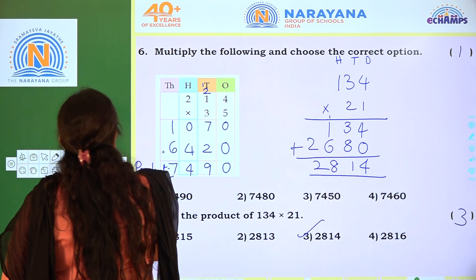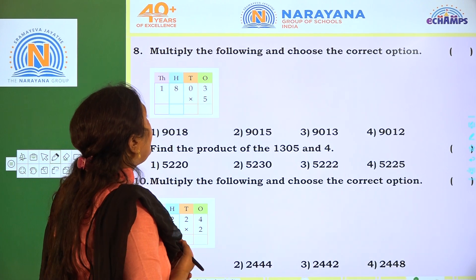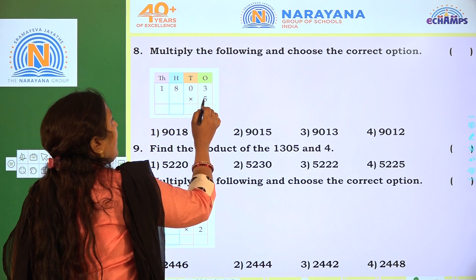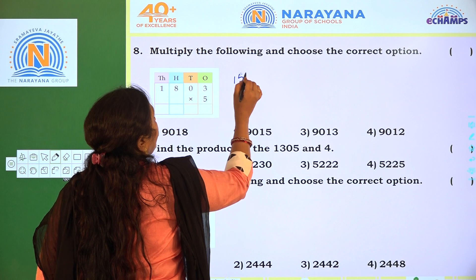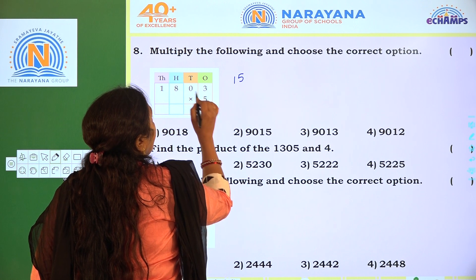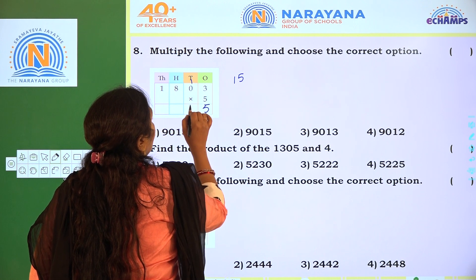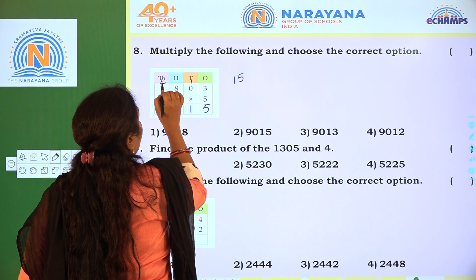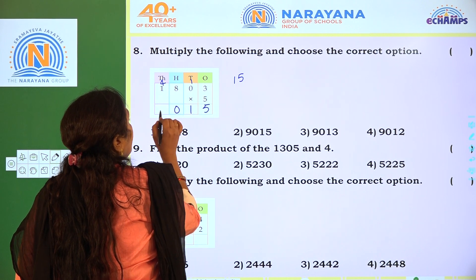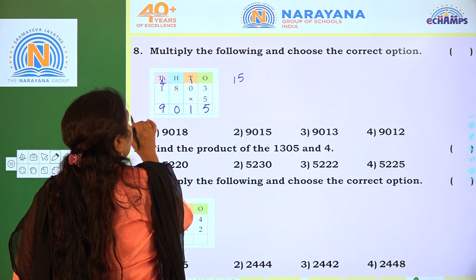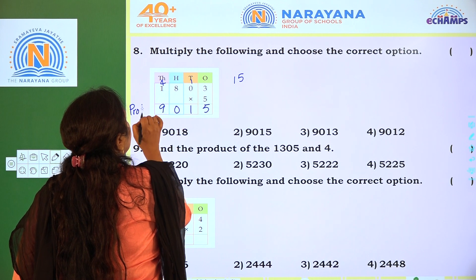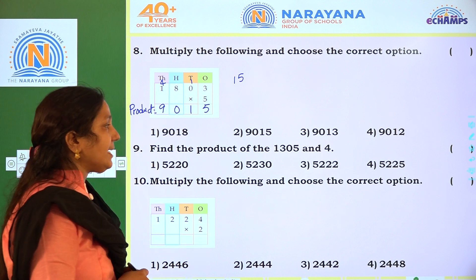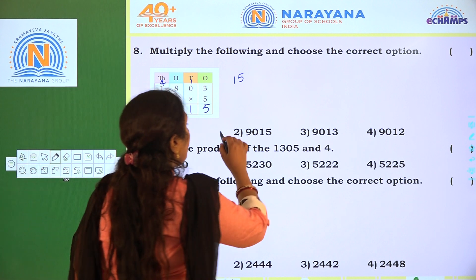Coming to the next one: multiply the following and choose the correct option. 5 3's are 15 — write 5. 5 0's are 0 plus 1 is 1. 5 8's are 40 — write 0, 4 regrouping. 5 1's are 5 plus 4 is 9. The product is 9,015 — option 2.